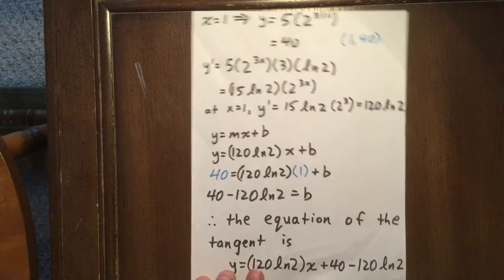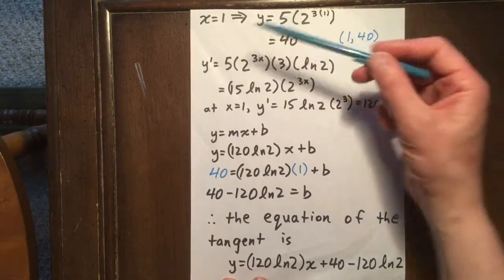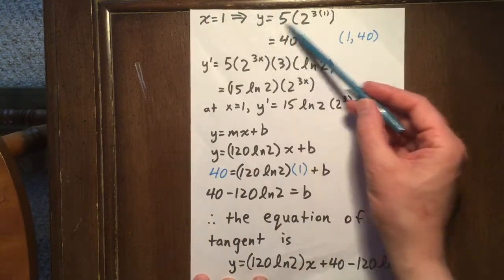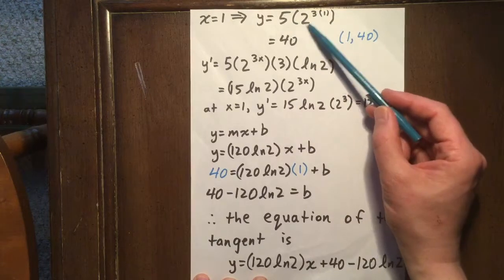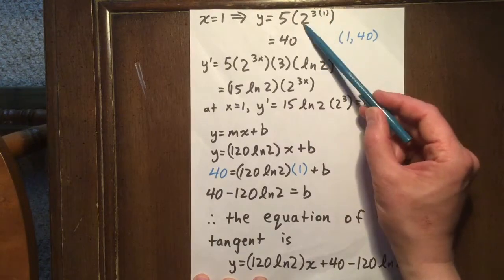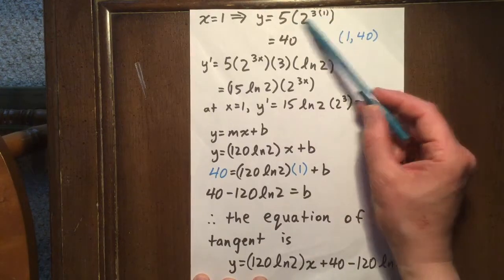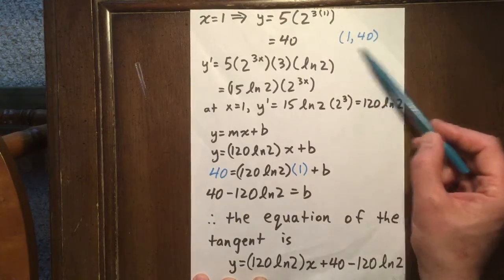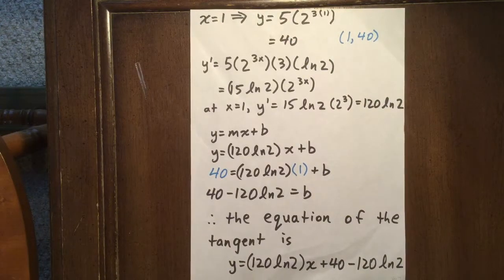First thing we need is a point. When x equals 1, the y value is 5 times 2 to the 3 times 1. 2 to the 3 times 1 is 8, and 5 times 8 is 40. So we're dealing with the point (1, 40).